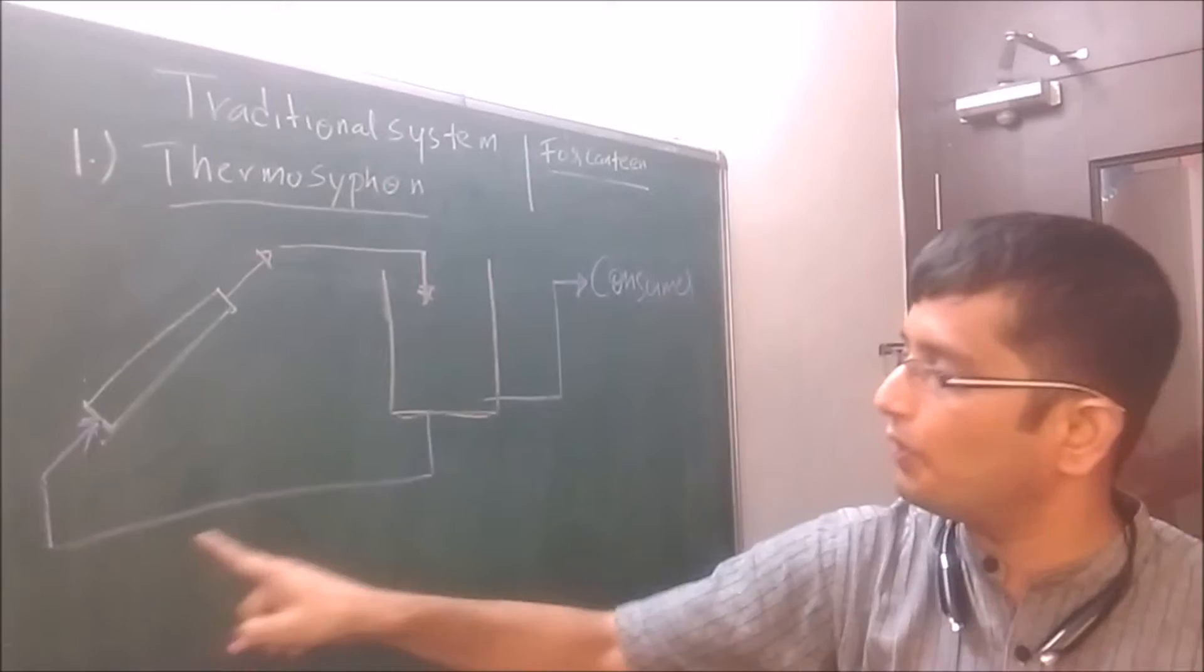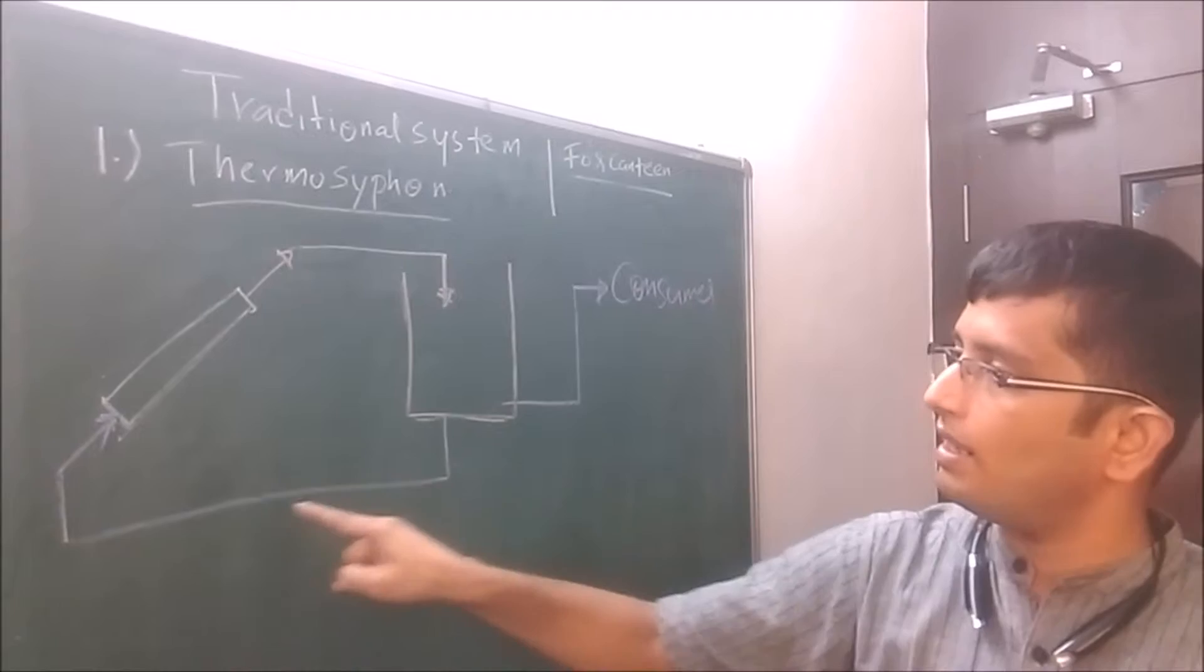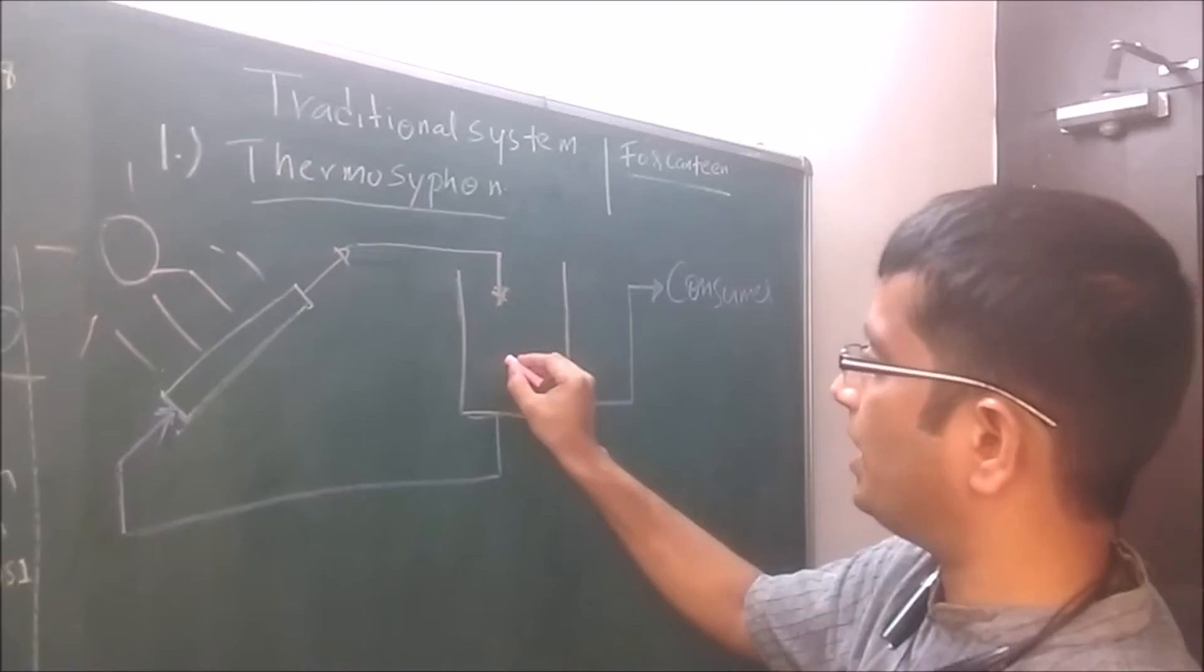simple thermosyphon systems where the circulation is only because of thermosyphon. If you look closely, there are no pumps in the system. So the cold water goes in, gets into the collector, then gets heated up because of the sun. All the sun rays fall on this collector.